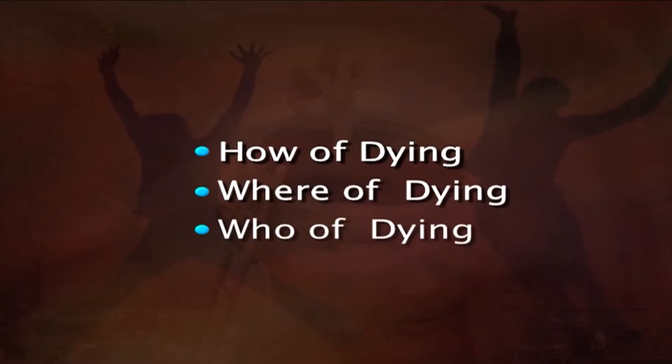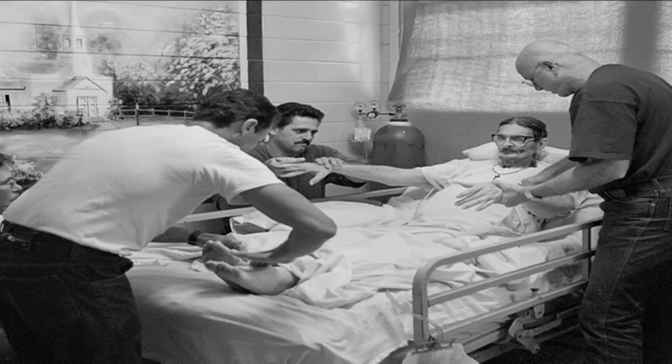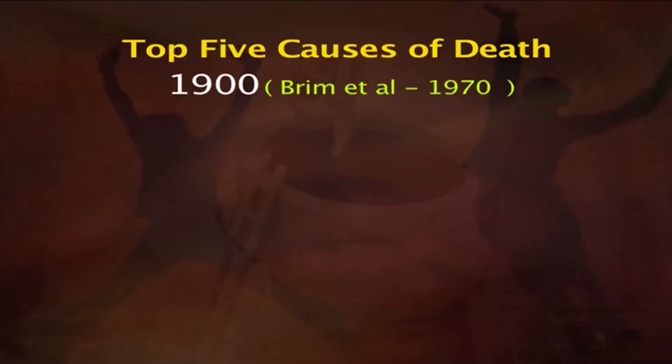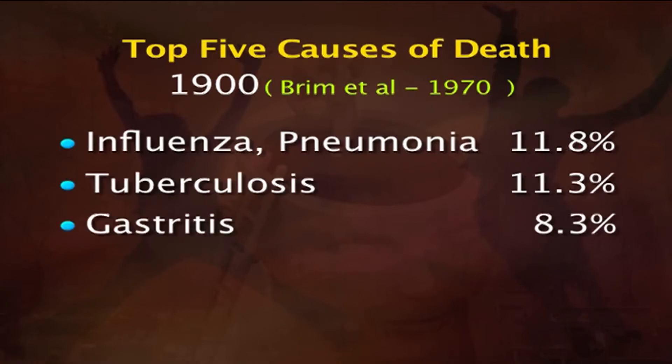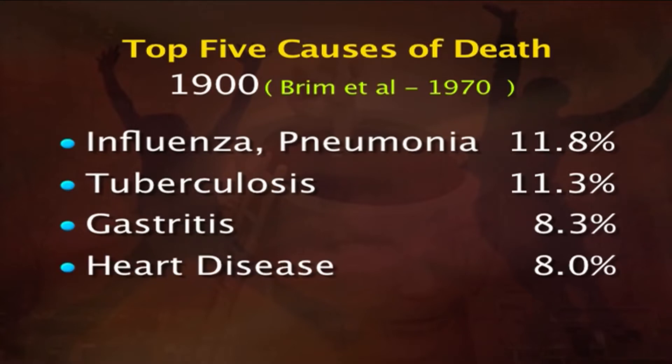Coming to the how of dying, management of the dying patient depends on what disease condition the patient is suffering from. Research results showed that what diseases people were dying of in 1900 are completely different from today. Brim et al. found that the top five causes of death in 1900 were influenza and pneumonia, followed by tuberculosis, then gastritis, and then heart disease and stroke.